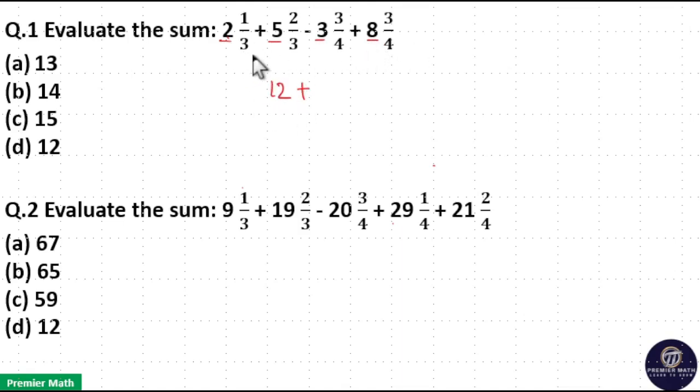Now add the fractions. 1 by 3 plus 2 by 3 is equal to 1, and minus 3 by 4 plus 3 by 4 cancel.